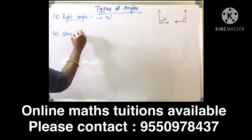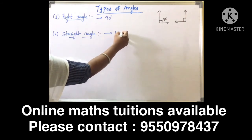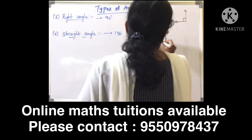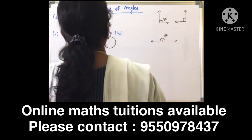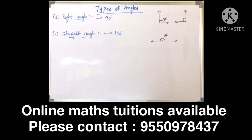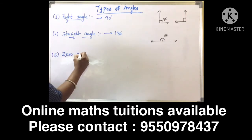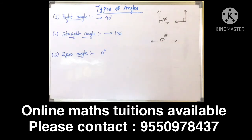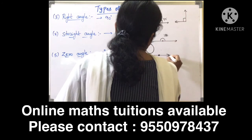The fourth type is straight angle. A straight angle is an angle whose measure is 180 degrees — it forms a straight line. Next is zero angle. An angle whose measure is zero degrees is called a zero angle.